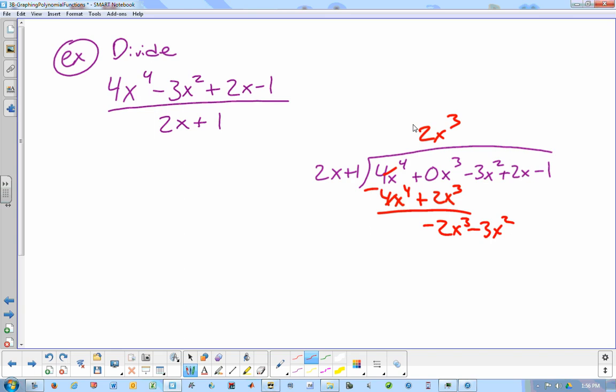What are we multiplying 2x by to get negative 2x cubed? Negative x squared. So negative x squared times 2x gives us negative 2x cubed. Negative x squared times positive 1 gives us negative x squared.